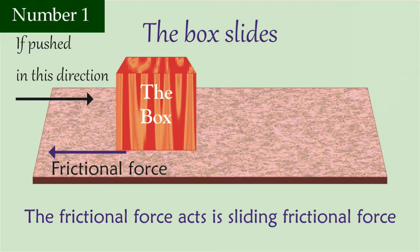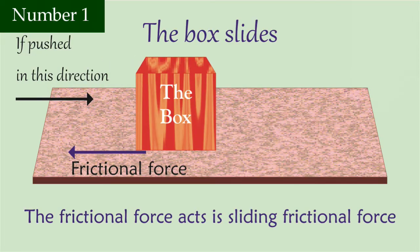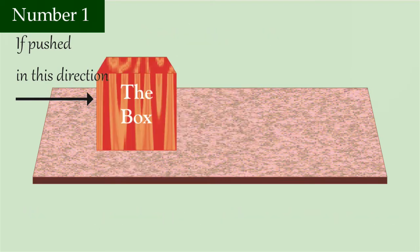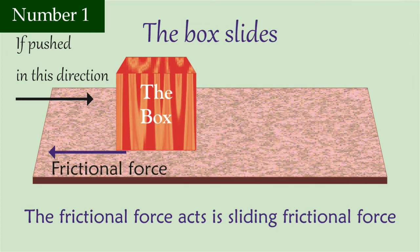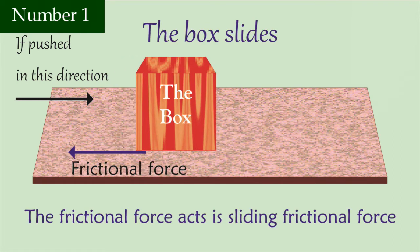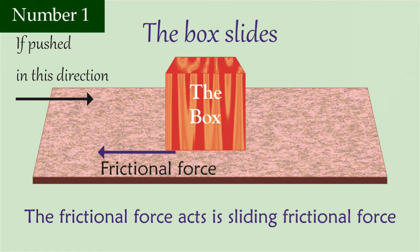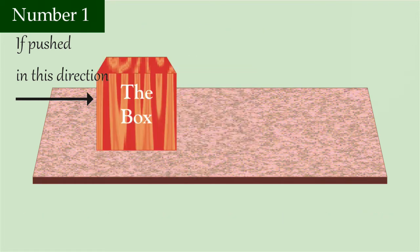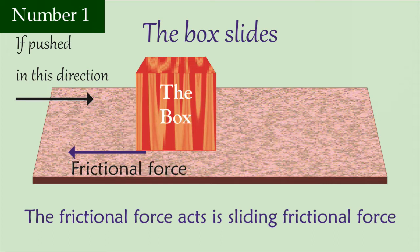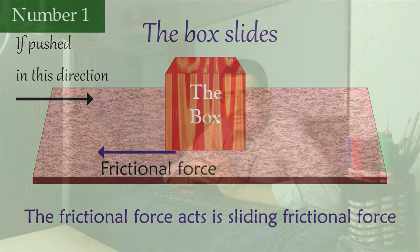An object may move in two different ways. Number one, it may slide over a surface. The flat surface of a box may move across a flat surface. In this case, the frictional force is said to be sliding frictional force.